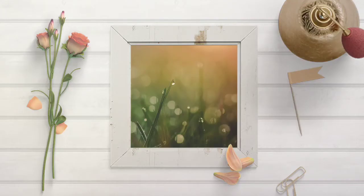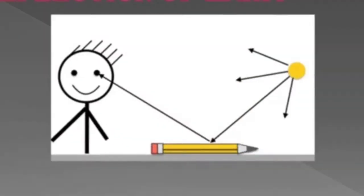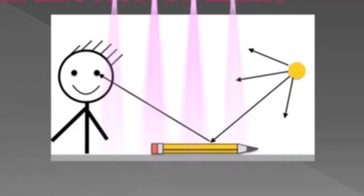Students, when light rays fall on an object, their direction changes and they turn back. This is called the reflection of light.